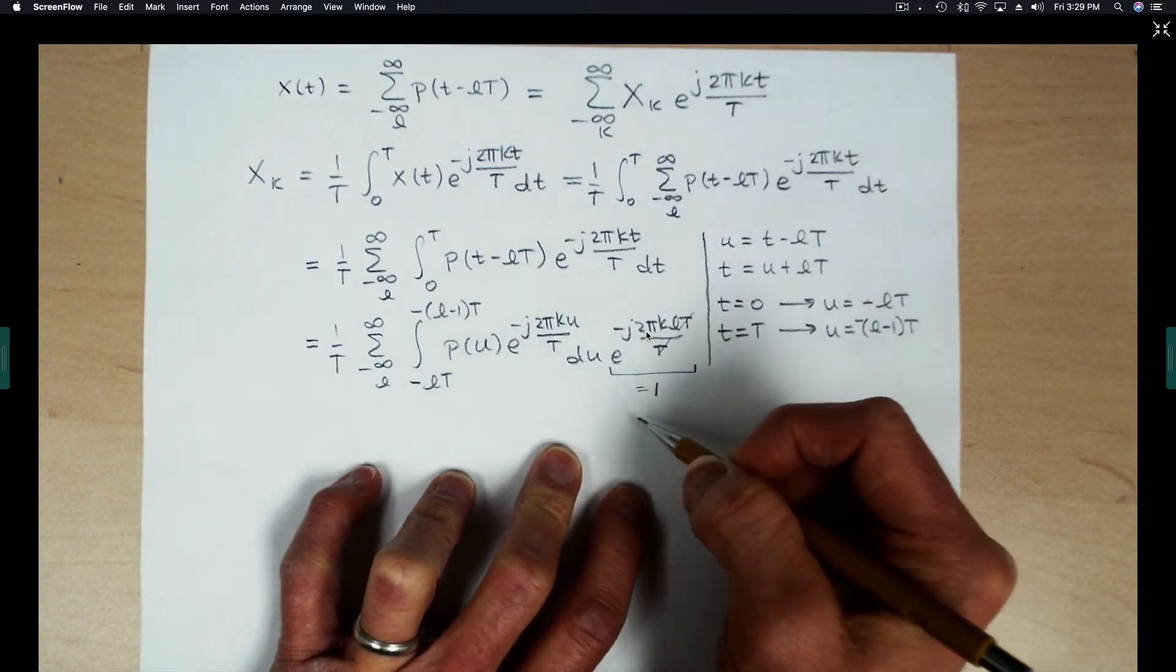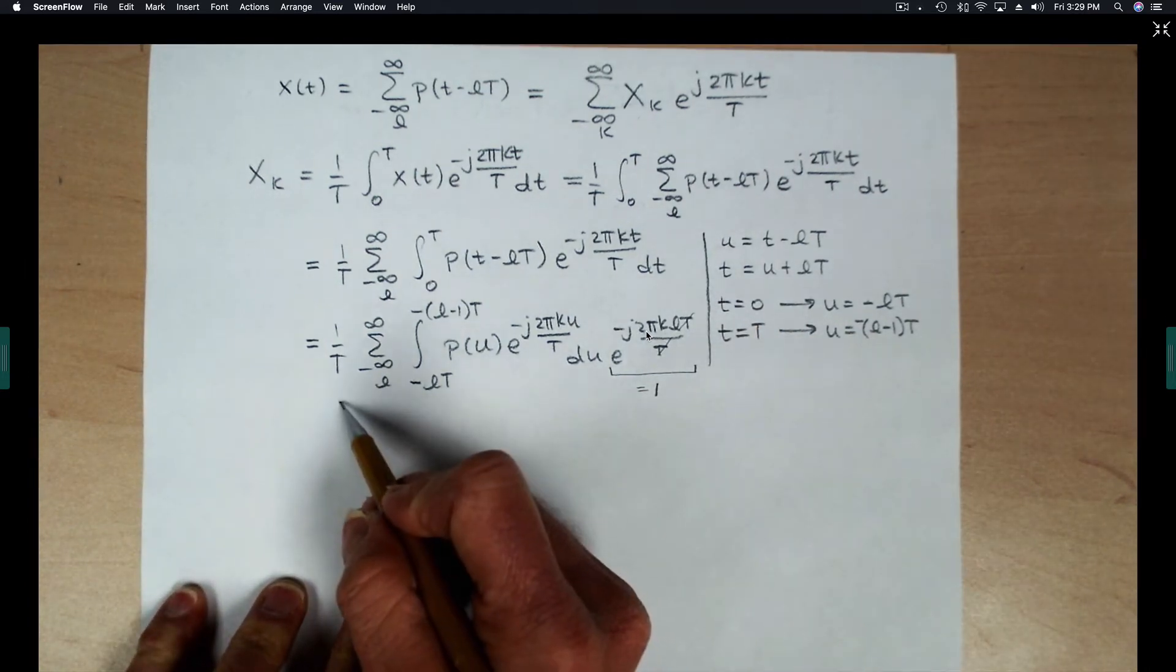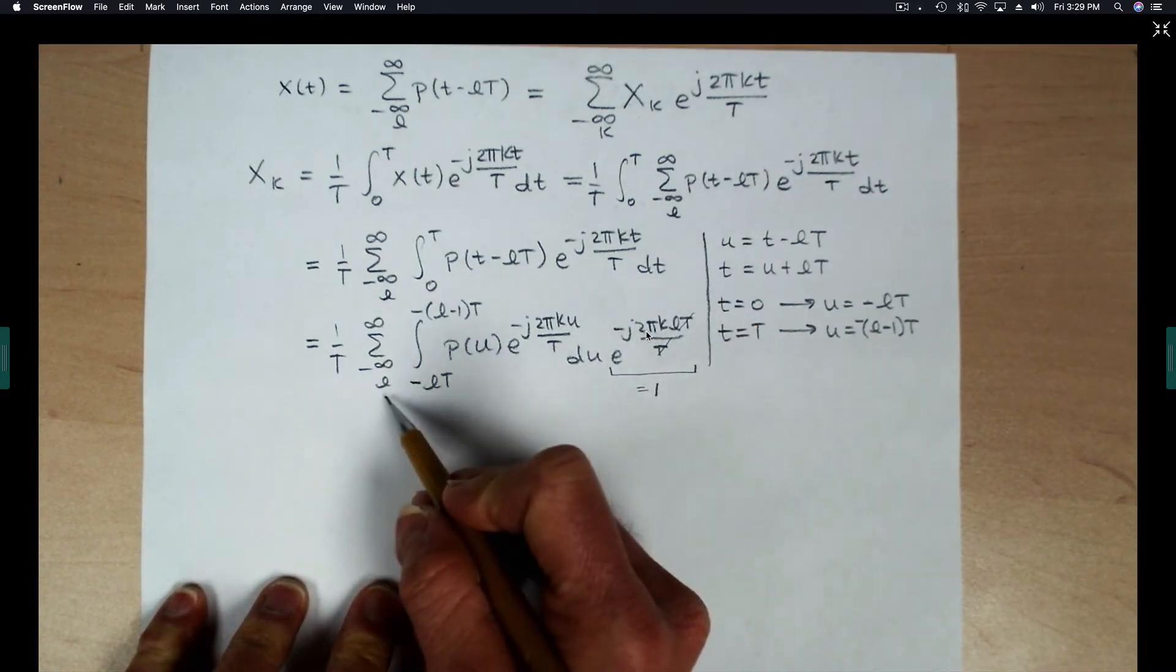So this whole complex exponential basically simplifies to 1. That drops out of the expression. And then we're left with evaluating this integral and then performing the summation.